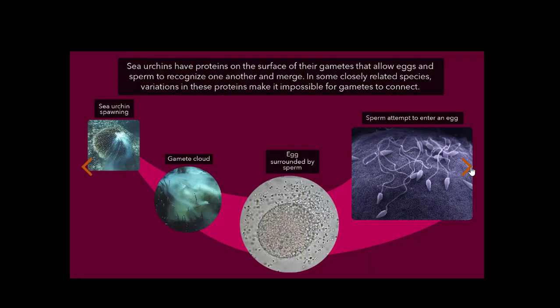Sea urchins have proteins on the surface of their gametes that allow eggs and sperm to recognize one another and merge. In some closely related species, variations in these proteins make it impossible for gametes to connect.